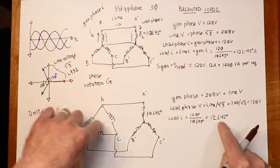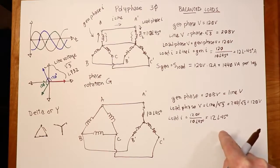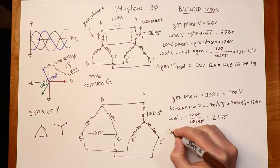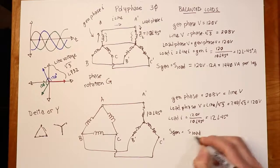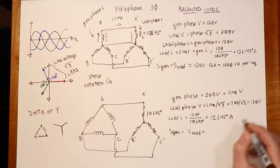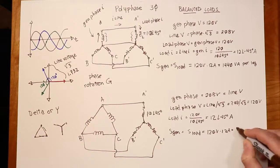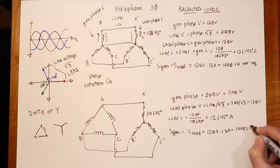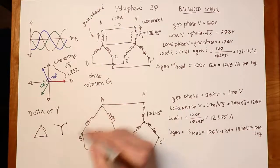What about the apparent power? Using the same expression — load phase voltage times load current — we get 12 amps times 120 volts, which is 1440 volt-amps per leg. As expected, the apparent power is the same. The one question we haven't answered yet is: what is the generator phase current?